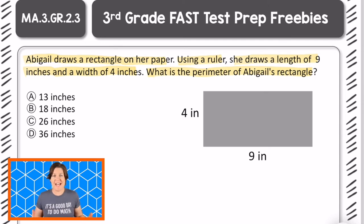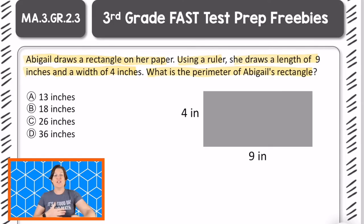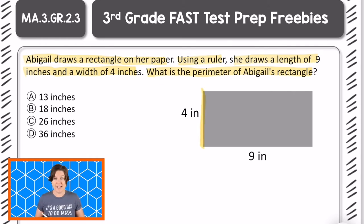Just last week we had a similar question with a rectangle and Abigail drawing the same length and the width. But this time the question is, what is the perimeter of Abigail's rectangle? And when we're finding the perimeter, we need to think of p-p-plus to add up all the sides, because the perimeter is the distance around a shape. So we need to measure the distance around, which means looking at this rectangle, we've got 4 inches on this side, plus 9 inches on this side, plus how many inches are right here?